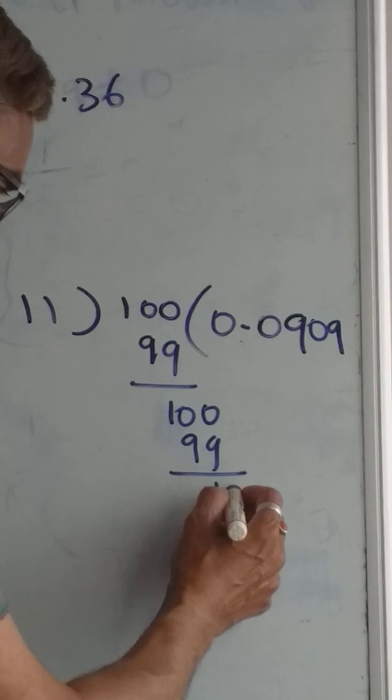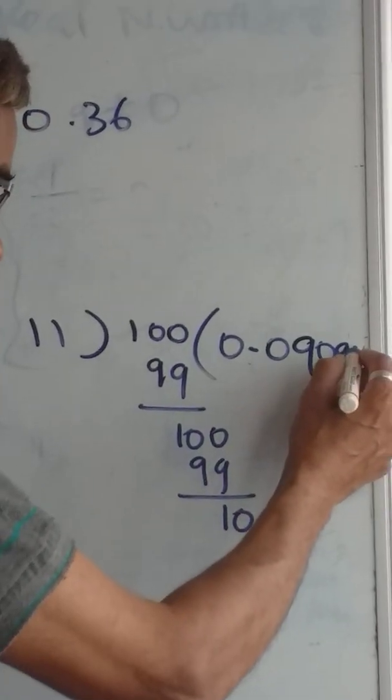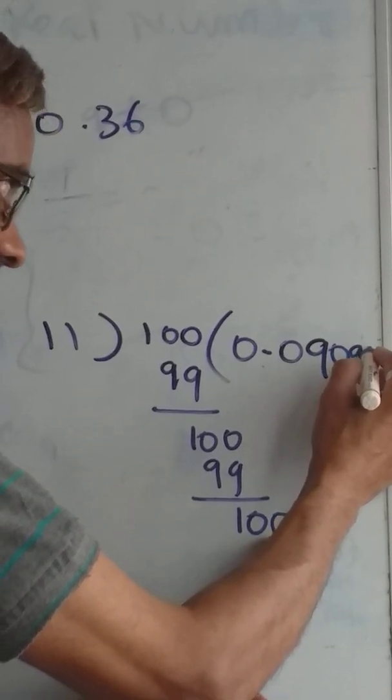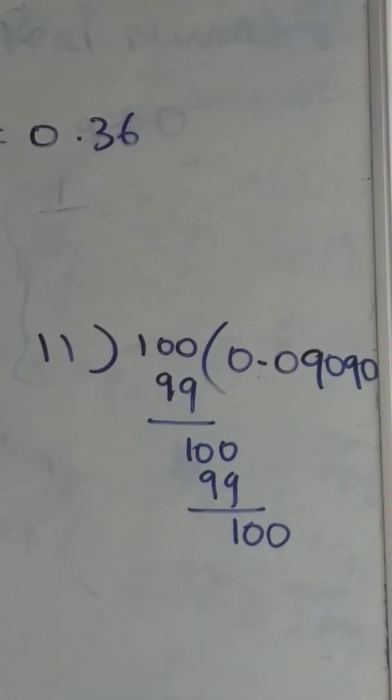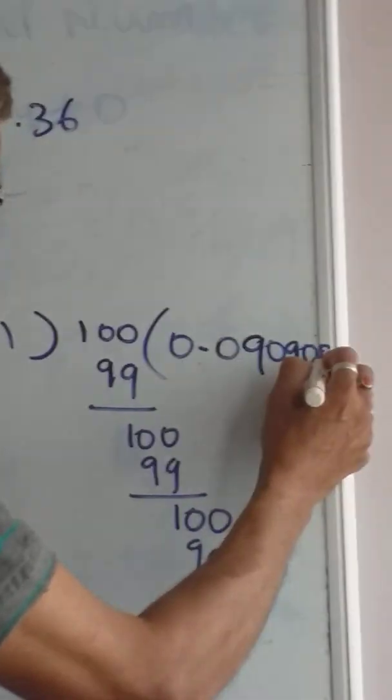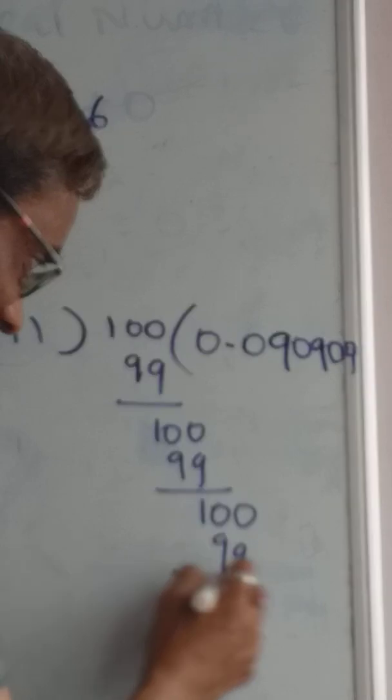Still not possible, add one 0 here and here. Again 99, remainder 1. The pattern continues: we get 9 each time.